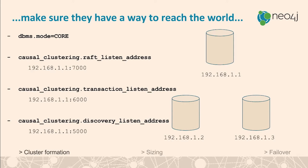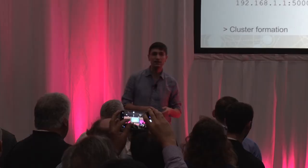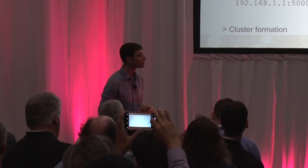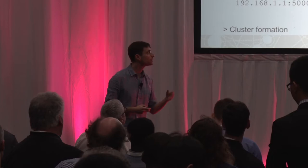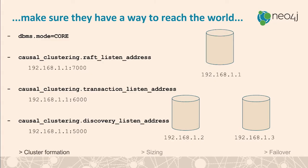Not all operations need to go over this costly consensus algorithm. For example, when you do backups or introduce a read replica, you can use a separate port — by default 6000 — called the transaction list address, which shares transaction data and store copies. This becomes important when an instance falls far behind and needs to fetch a new store copy, or when doing a backup. Finally, you need the discovery list address, used for communicating membership information between instances, and for new members joining the cluster to discover what is already in place.